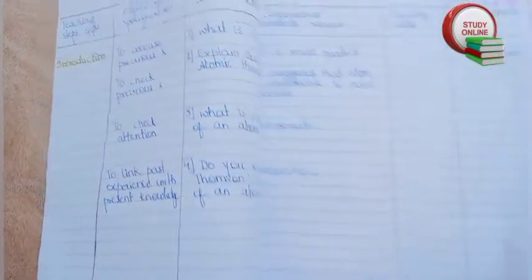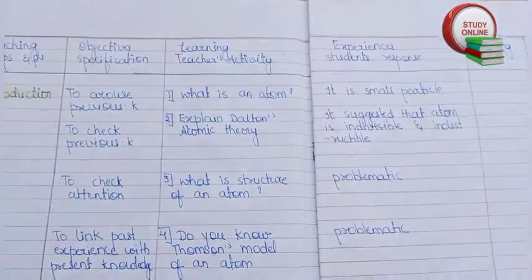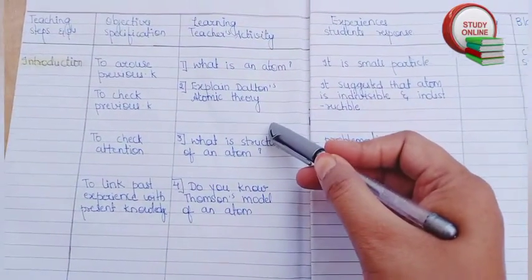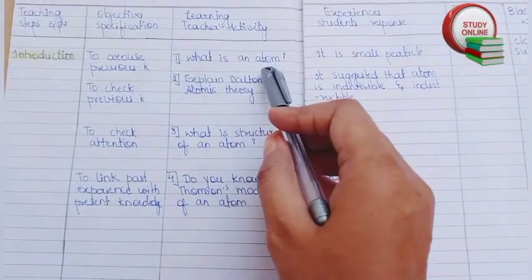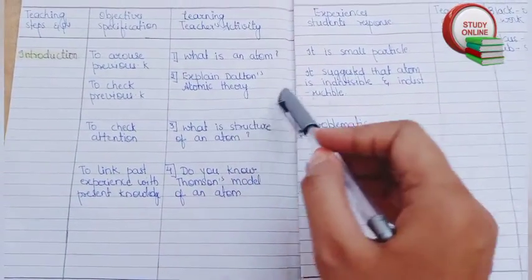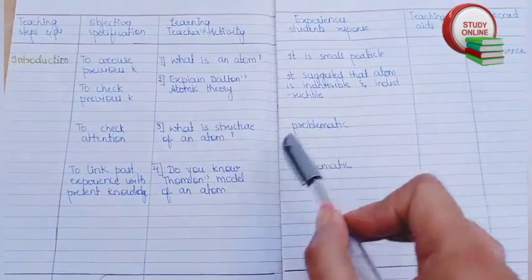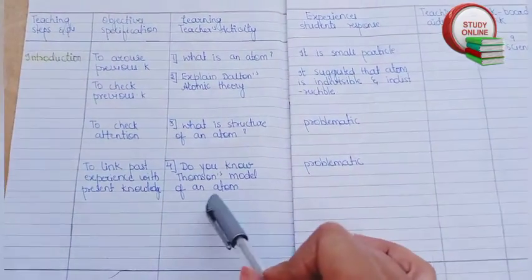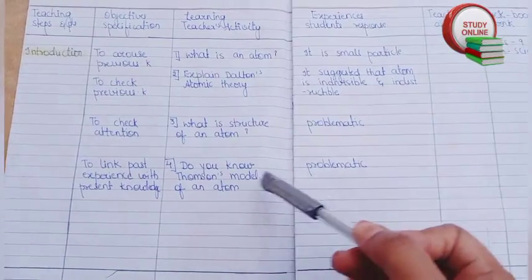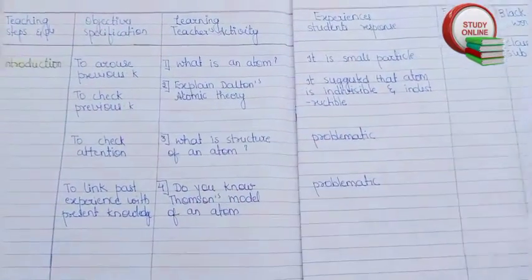Here you can see a list of questions that we have to ask students. These are introduction questions. First we have to ask what is an atom, then students will answer. Explain Dalton's atomic theory. What is structure of an atom? It would be problematic. Do you know Thompson's model of an atom? Or we can ask describe Thompson's model of an atom - it would be problematic.